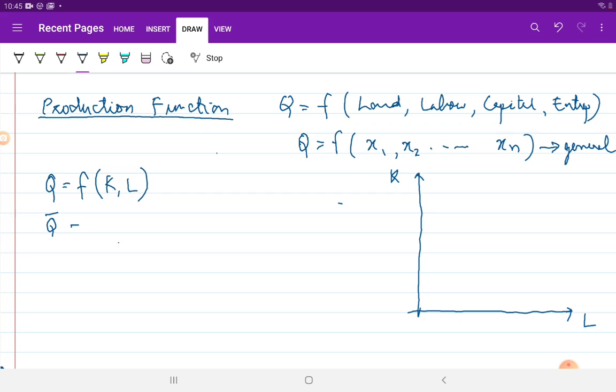And if you shift it to a specific case of this general function, you can represent it in this way. Whereas this is your production function, this specific case is your iso-quant.